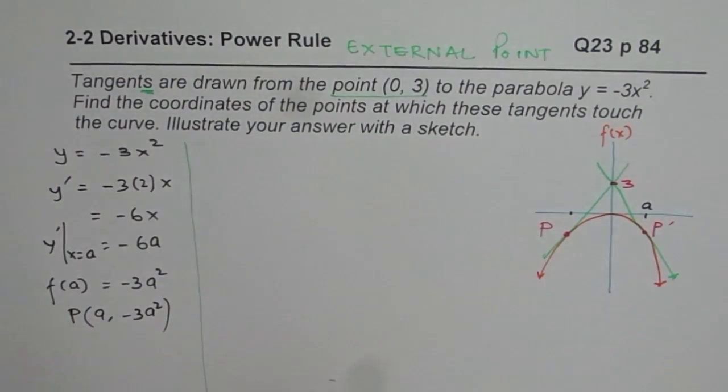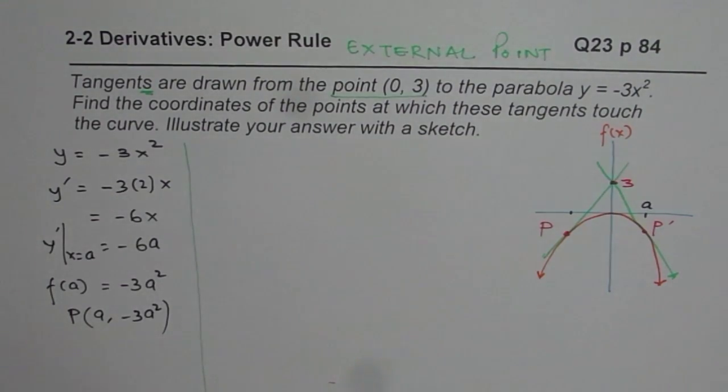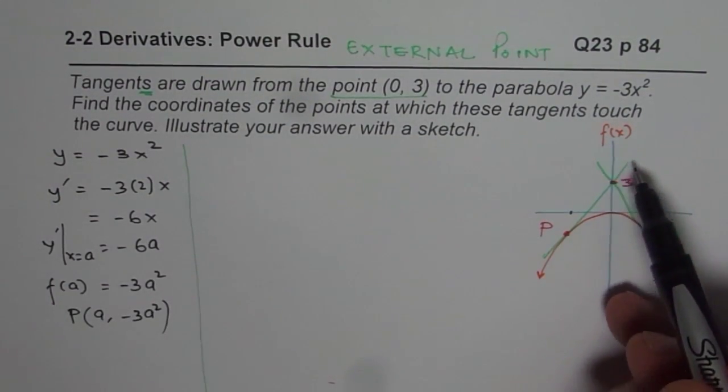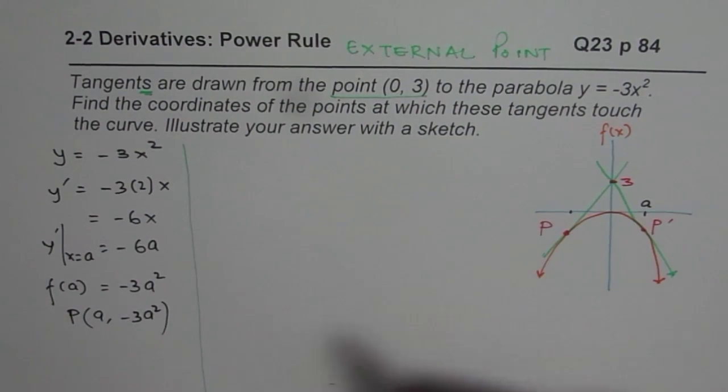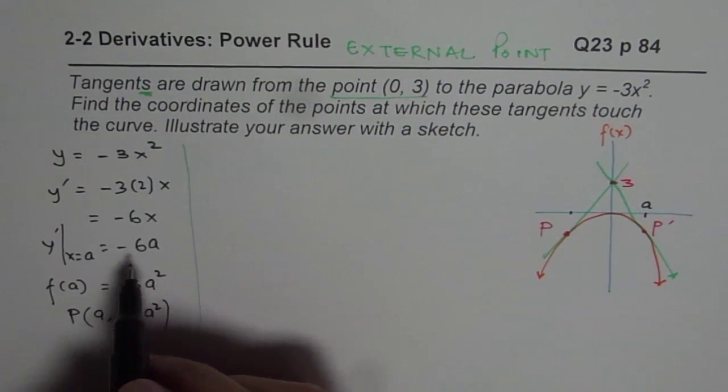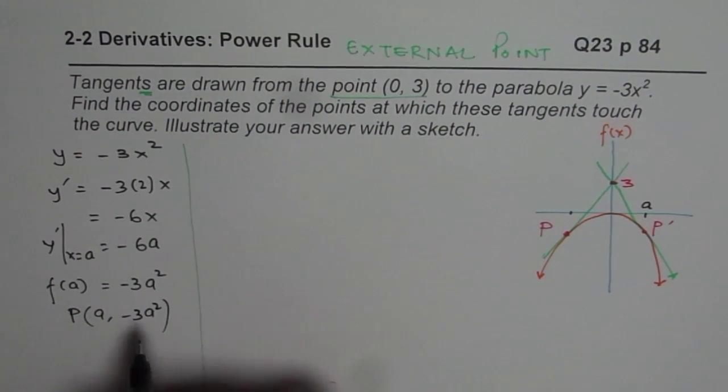We already found that the tangent slope is -3a². Oh sorry, is -6a. And the point is (A, -3a²).